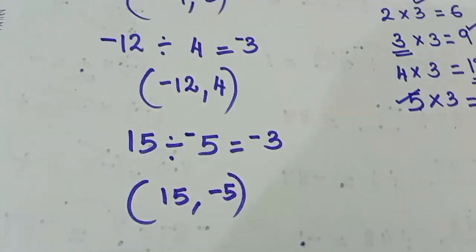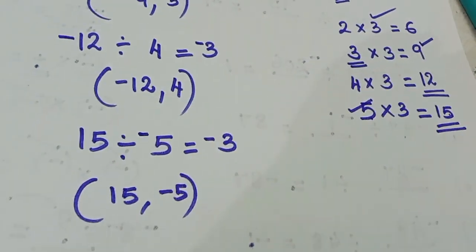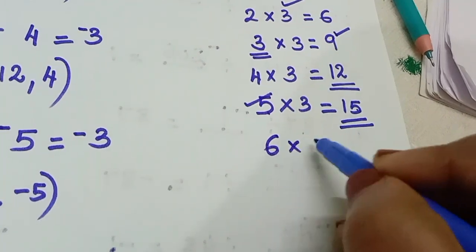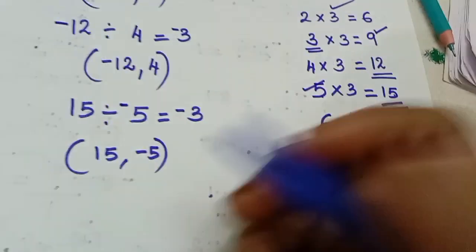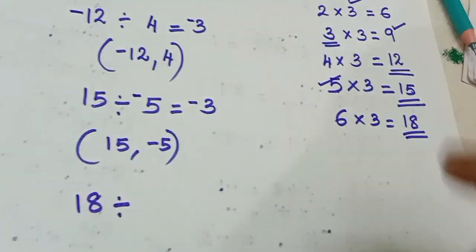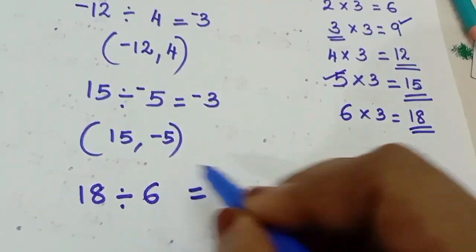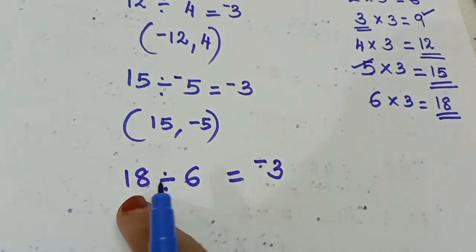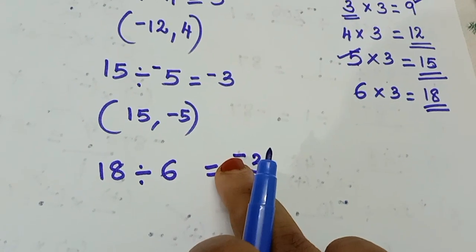15 minus 5. We need to do this trick. 18 divided by 6 is 3. Then the counting number is 7. The answer is 21. 21 divided by 7 is 3. Now the answer is negative sign. If we have negative sign, Mr. Varun is here. The answer is negative sign.